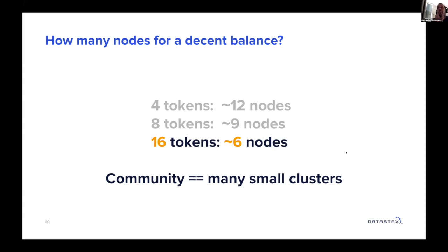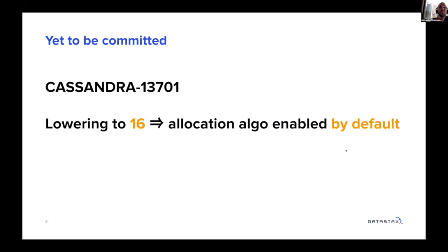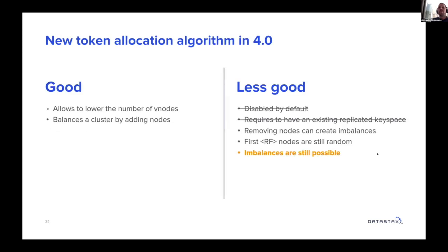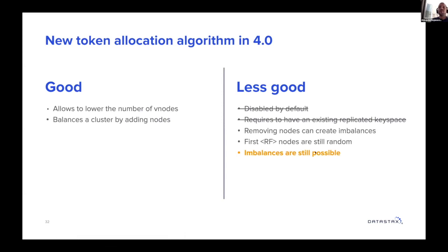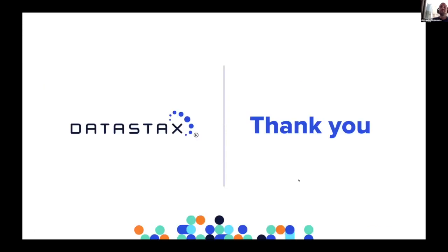Remember the three Cs — community is made of a lot of small clusters. We cannot decently pick a default that will create imbalances in clusters smaller than 12 nodes because there are a lot of those out there. So we came to an agreement: it seems the default is going to be lowered to 16, and the algorithm will be enabled by default. The 'disabled by default' issue will be fixed in 4.0. Imbalances are still possible and we need to keep that in mind.